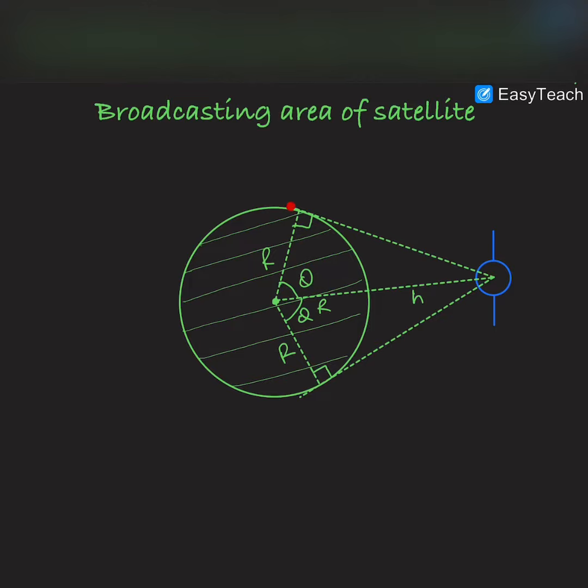And this region is the dark spot. The dark spot is the point which is not illuminated from the signals, so no signal would be received by any receiver in this region. So we have to find out this broadcasting area of the satellite.